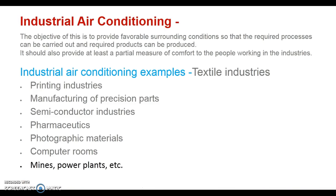Industrial air conditioning applications include especially textile industries, printing industries, manufacturing of precision parts, electronic industries where various electronic gadgets are produced, pharmaceuticals, photographic materials, computer rooms, mines, and power plants. These are the varieties of fields where air conditioning is required for the said processes.